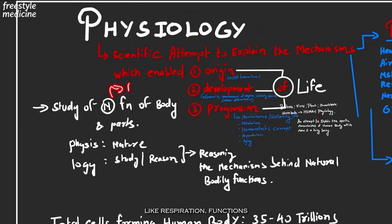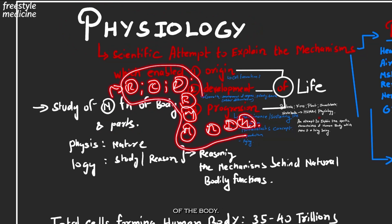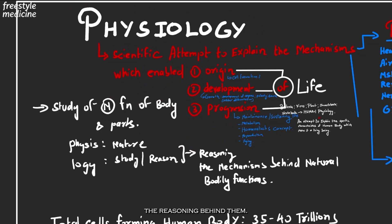Functions like respiration, circulation, digestion and absorption, excretion, metabolism, movement, reproduction, immunity, and homeostasis. These are all the normal functions of the body, and us trying to decipher the reasoning behind them, the mechanisms that are involved behind them, is nothing but physiology.